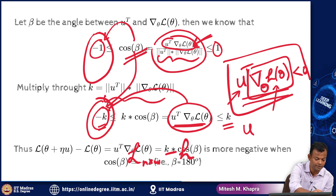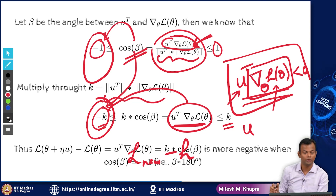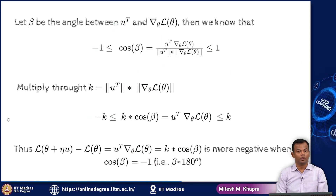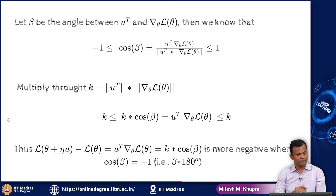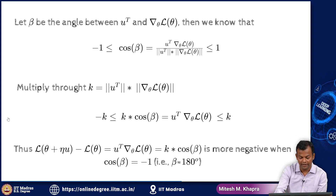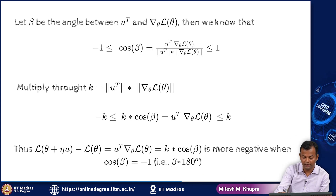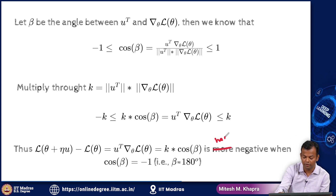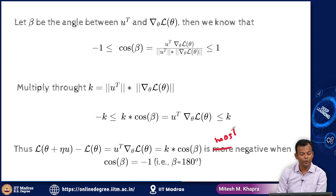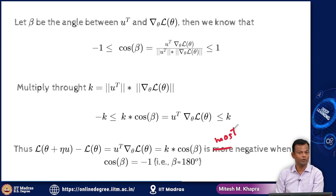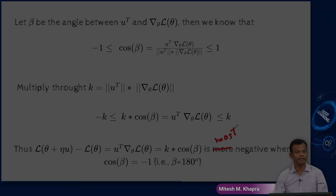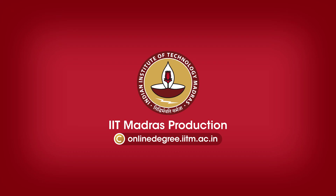We started off with the Taylor series that gave us a condition on what a good u should be. We pushed that condition to its limit — we wanted it to be less than zero, and we found that the most negative value occurs when beta equals 180 degrees, i.e., when u is exactly opposite to the gradient vector. That is why you move in the direction opposite to the gradient vector.